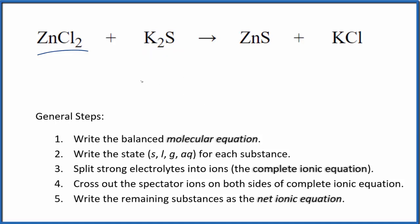The first thing we need to do with net ionic equations, we need to balance the molecular equation here. I can see there are two potassiums here and just one here. I'll put a two here. Now I have two chlorides, two chlorides here, zinc, zinc, sulfide, sulfide. We're good. This equation is balanced.